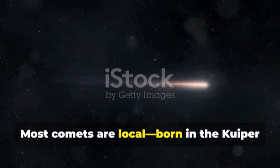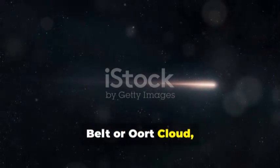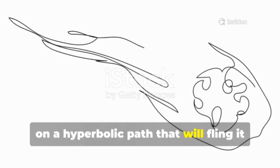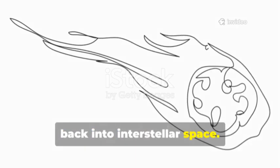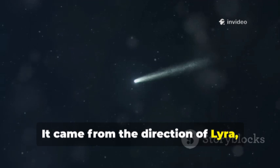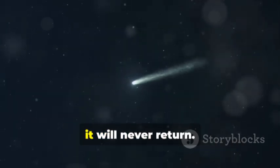Most comets are local, born in the Kuiper belt or Oort cloud, forever bound to our sun, but 3i-Atlas is an outsider on a hyperbolic path that will fling it back into interstellar space. It came from the direction of Lyra, and after its brief visit, it will never return.